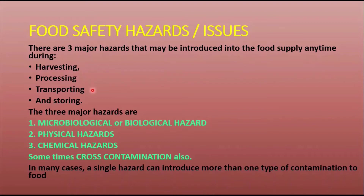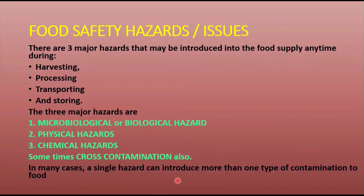Most food safety hazards fall into one of three or four categories. The first is microbiological or biological hazards. The second is physical hazards. The third is chemical hazards. Sometimes cross contamination may also cause food safety hazards. In many cases, a single hazard can introduce more than one type of contamination to the food we are consuming.